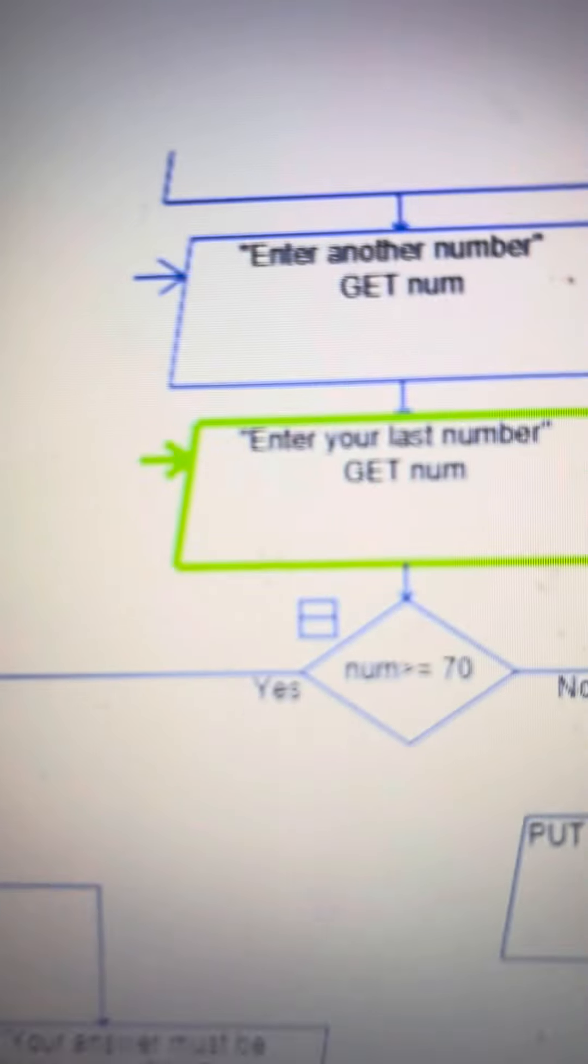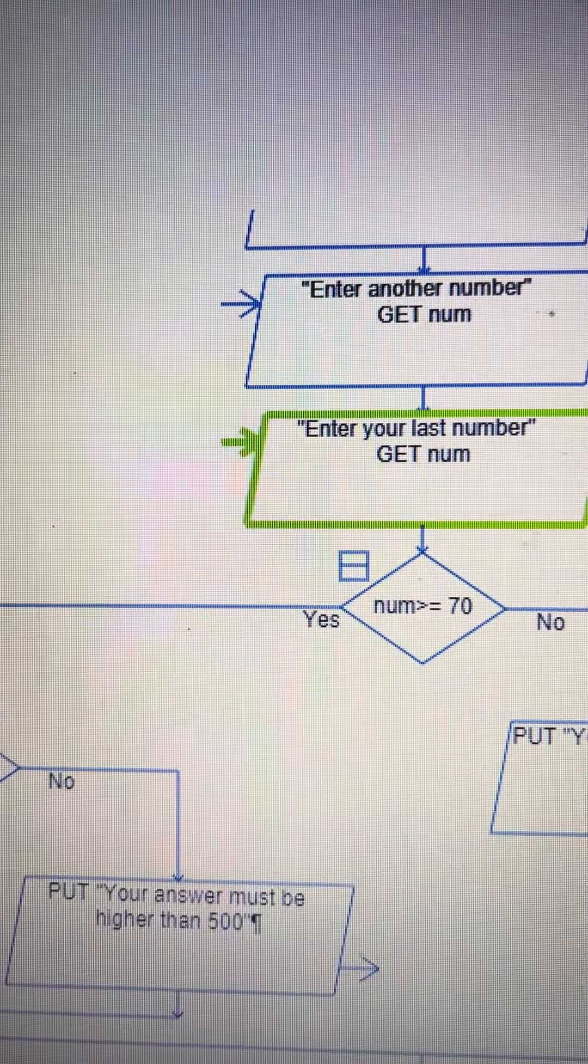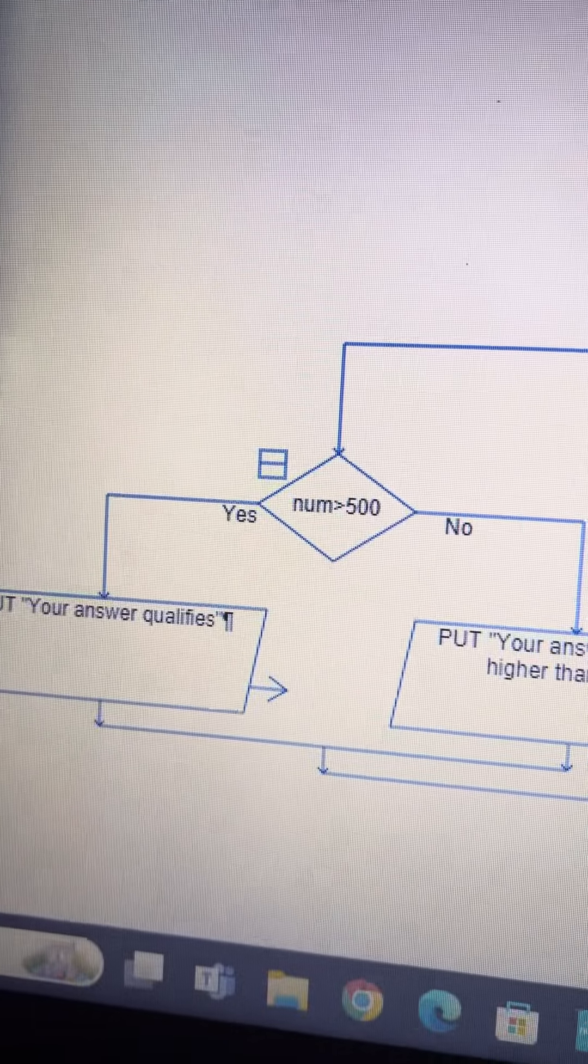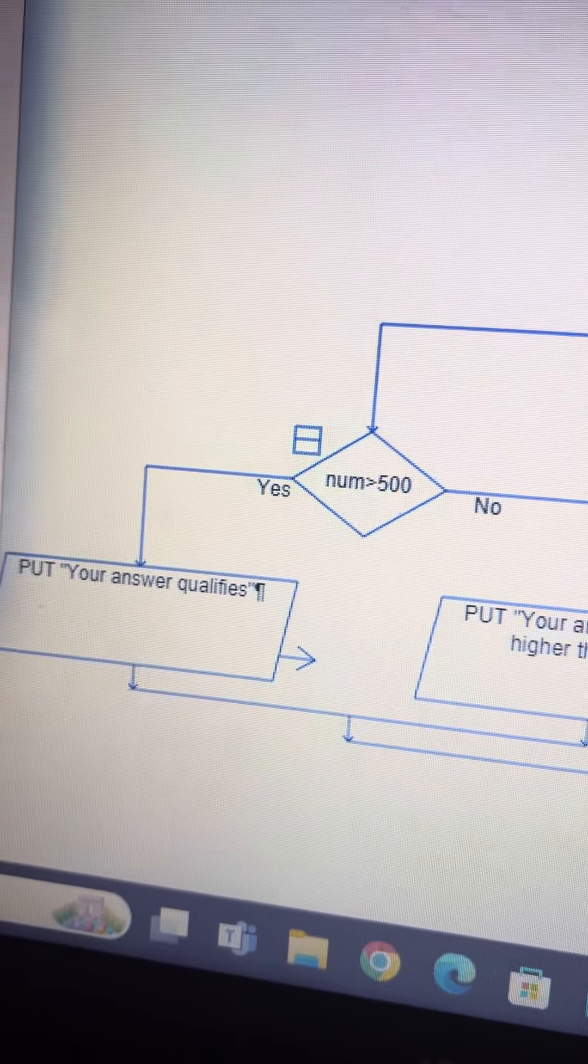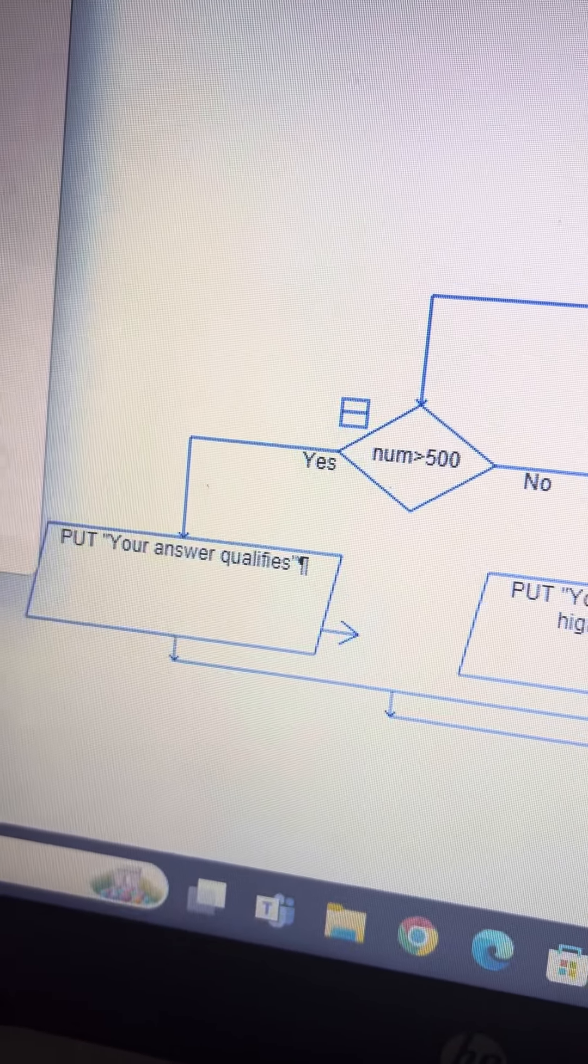After the number is at least equal to or greater than 70, it also has to be greater than 500. If it is, my answer will qualify because it's greater than 500.